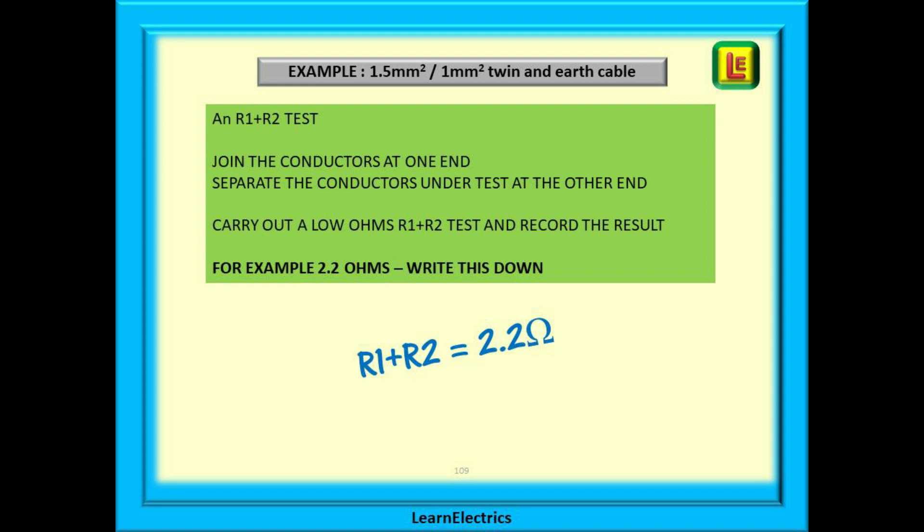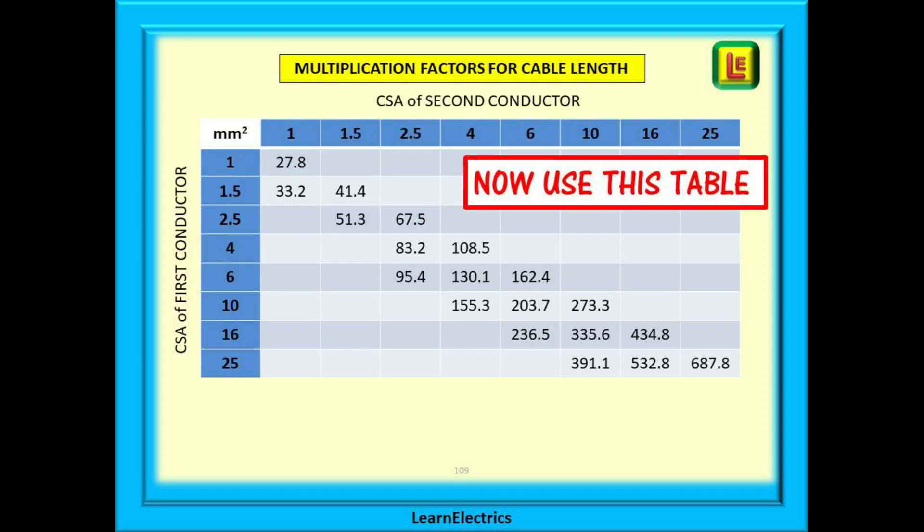in this example, that we have a result of 2.2 ohms. Write this first number down. And that's the hardest part done.